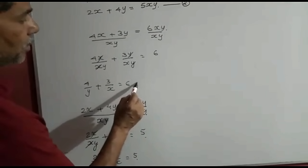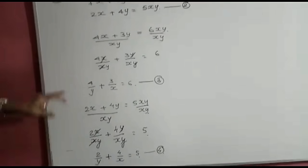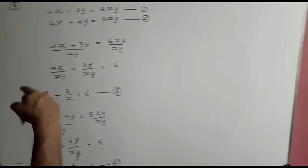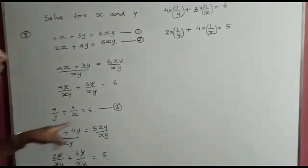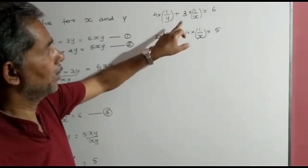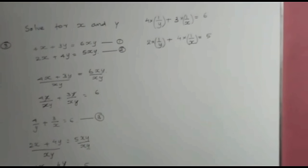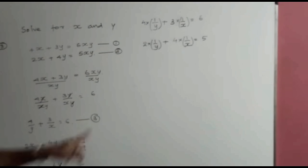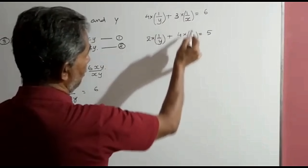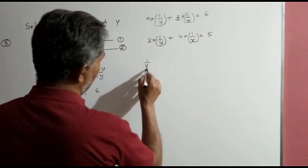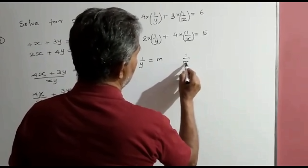Now look at equations 3 and 4. Equation 3 is written as 4 into 1 upon y plus 3 into 1 upon x equals 6. And equation 4 is 2 into 1 upon y plus 4 into 1 upon x equals 5. You can see the repeating terms are 1 upon y and 1 upon x. So we replace 1 upon y by m and 1 upon x by n. The third equation becomes 4m plus 3n equals 6, and the fourth equation becomes 2m plus 4n equals 5.